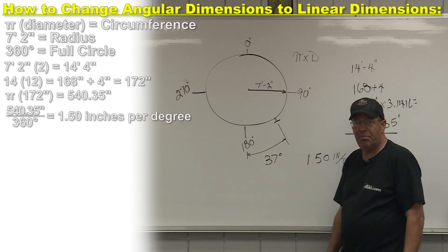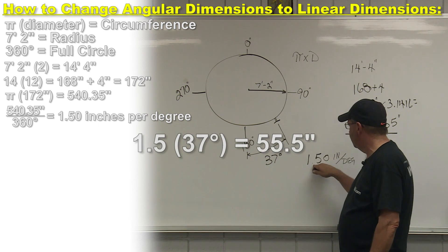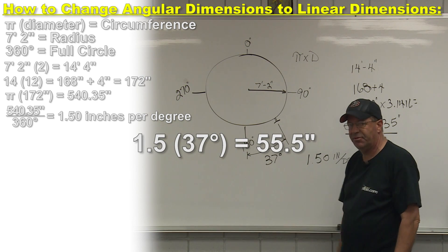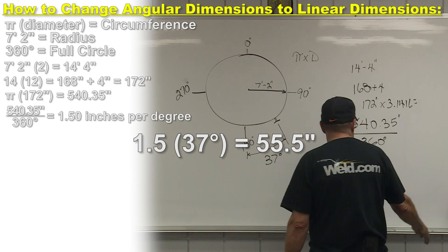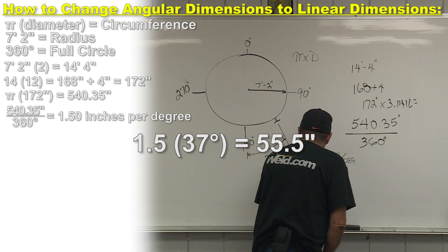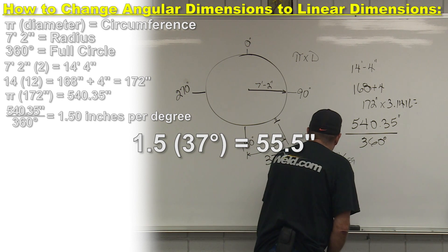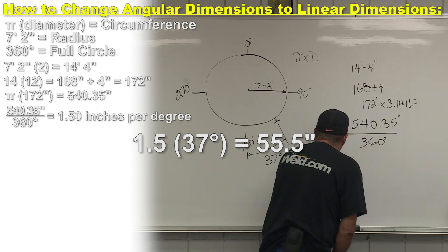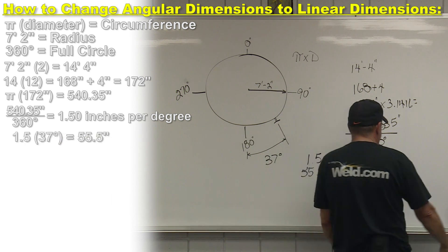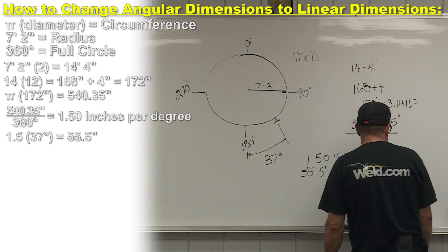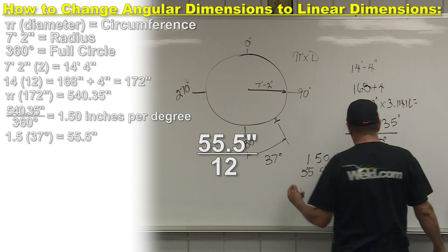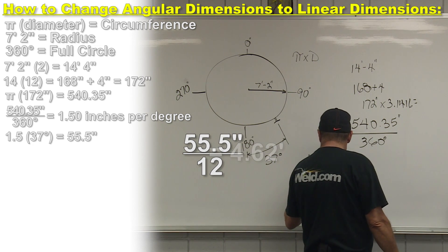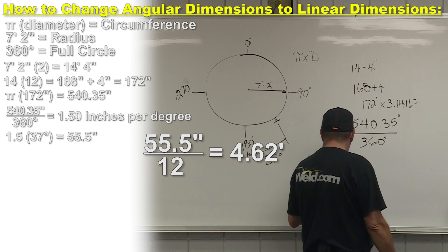I'm pretty much at the end of my problem here because all I have to do is multiply 1.5 times 37 degrees. The units cancel and I come up with this number of 55.5 inches. I can convert that to feet by dividing that by 12. I would get 4.62 feet.